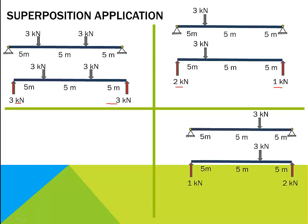Now remove the left hand side load and put the other 3 kN load and calculate the reactions. This time the reaction on left will be 1 kN and on the right support will be 2 kN.